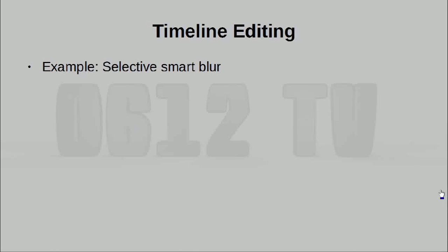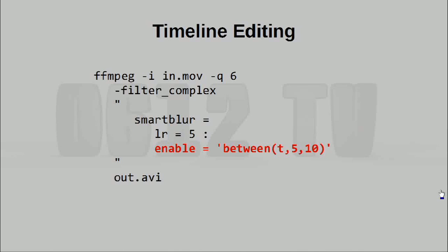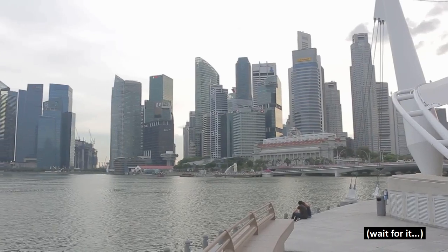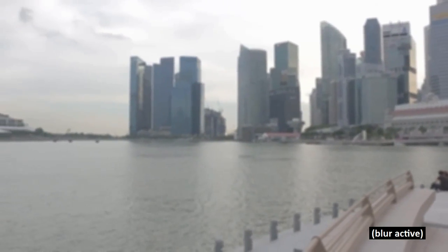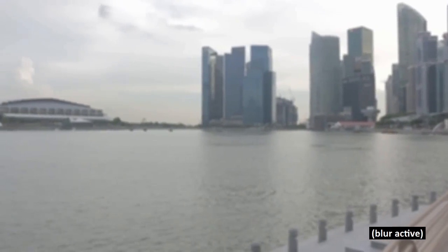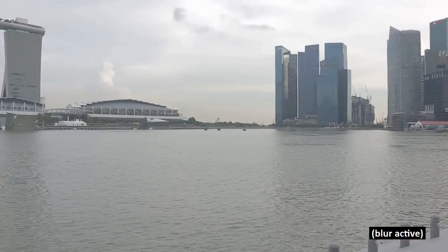When it comes to using the timeline to control filters, you're going to have to specify things in a kind of mathy way. Basically, if we want to have a blur function that only runs between the fifth second and the tenth second, you can say something like: enable this filter when T is actually between 5 and 10. And as you can see, it works. Do note that the enable feature isn't actually available in every single filter, but many of the filters do have it.